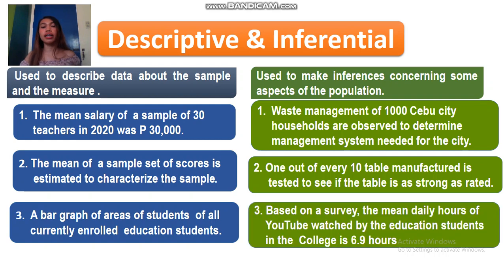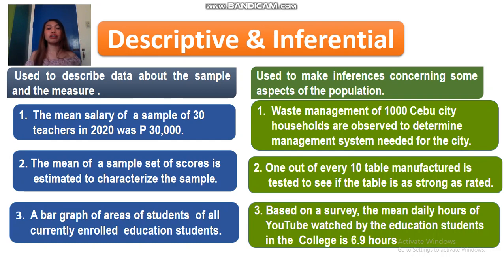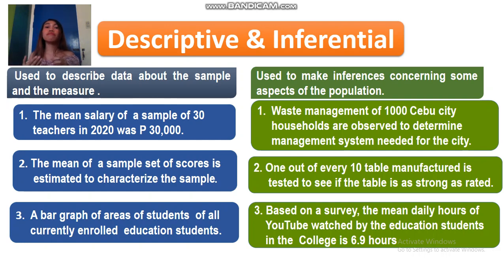Let's have one example for inferential. Based on the survey, the mean daily hours of YouTube watched by the education students in the college is 6.9 hours. The population is the entire education students. The phrase 'based on a survey' indicates that a sample was created from that entire population. From that sample, the data — mean daily hours of YouTube watched is 6.9 hours — is reflected to the entire population as conclusion or inferences. So this is inferential statistics.